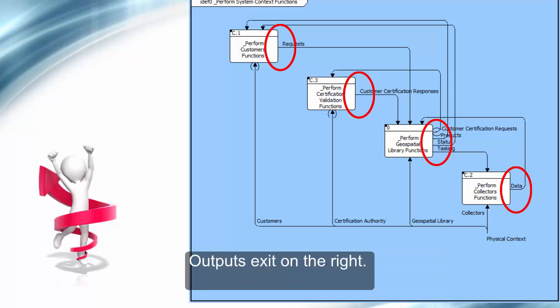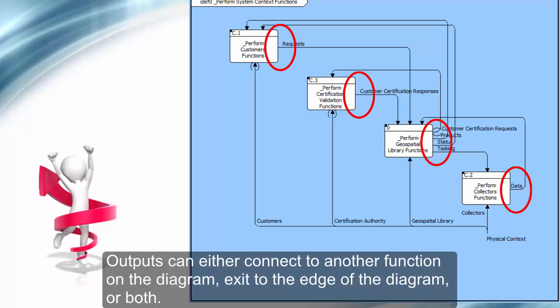Outputs exit on the right. Outputs can either connect to another function on the diagram, exit to the edge of the diagram, or both.